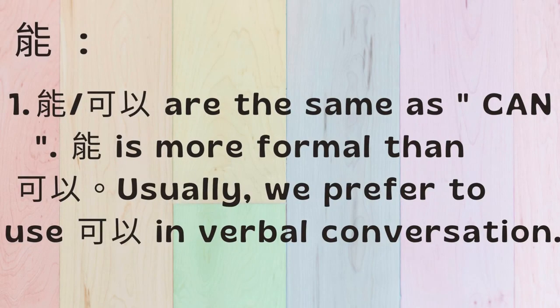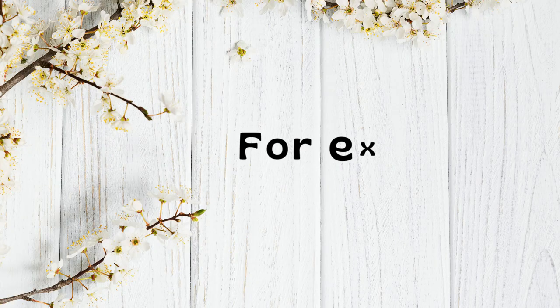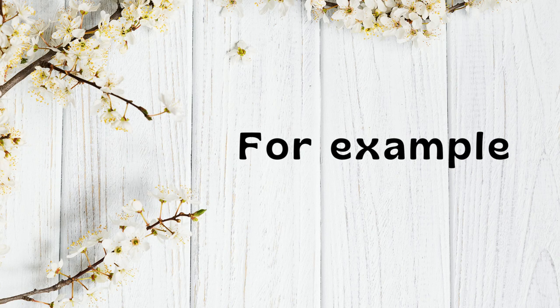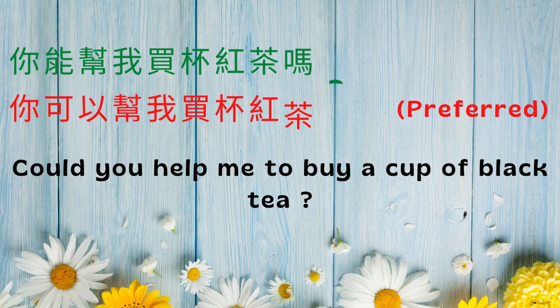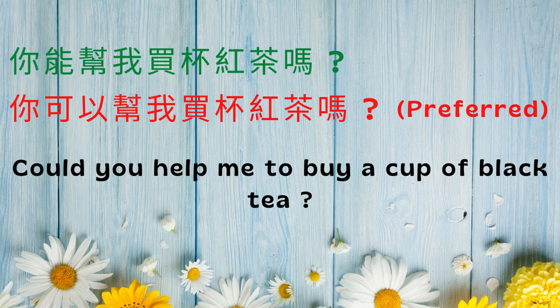能 and 可以 both mean 'can'. 能 is more formal than 可以. Usually, we prefer to use 可以 in verbal conversation. For example: 你能帮我买杯红茶吗? Or, preferred: 你可以帮我买杯红茶吗? Both mean: Could you help me to buy a cup of black tea?